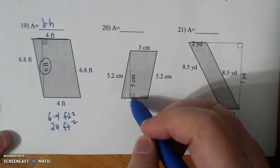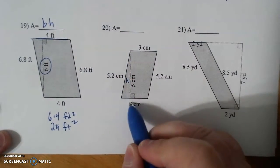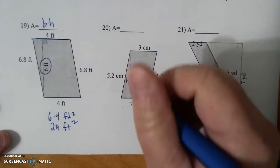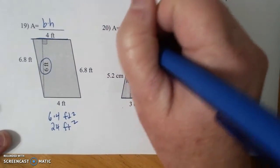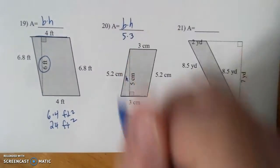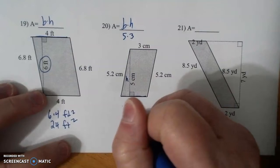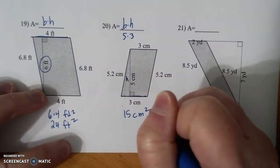Find the perpendicular measurement. That's your height. Perpendicular to the base, which is base times height, which is 5 times 3, which is 15 centimeters squared.